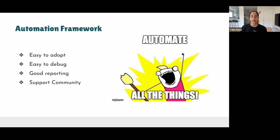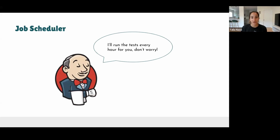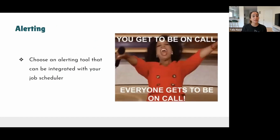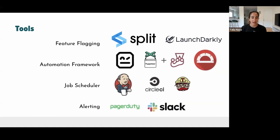The next tool you need is an automation framework. It's not scalable to test everything manually, especially with the risks of testing in production. You want a framework that's easy to adopt, easy to debug, has good reporting, and a good support community. You'll also need a job scheduler to run your tests — it can be a simple cron job or through a test scheduler like Jenkins. And you need an alerting tool that integrates with your job scheduler. It's important that everyone on your team — from product to design to engineering — is on call, because everyone owns product quality.